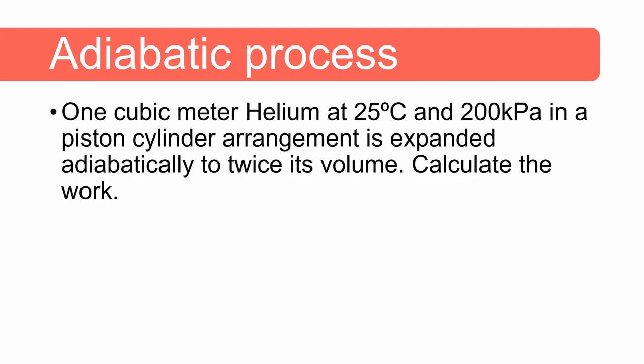Now let's do a problem using the equation for an adiabatic process. The problem states one cubic meter of helium at 25 degrees celsius and 200 kilopascal in a piston cylinder arrangement is expanded adiabatically to twice its volume, so two cubic meters. Calculate the work. Pause this video and have a go.